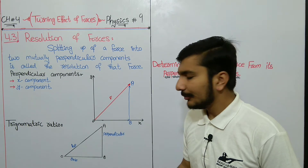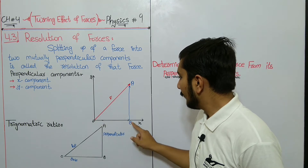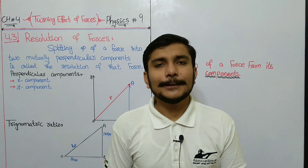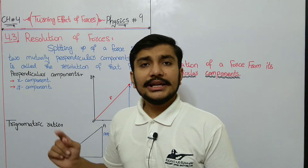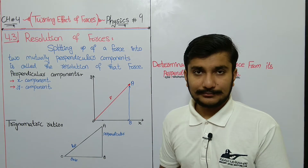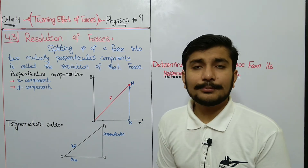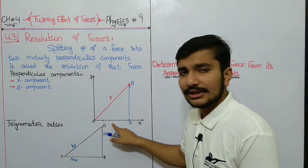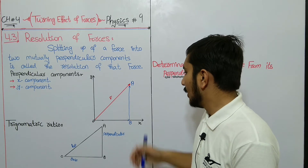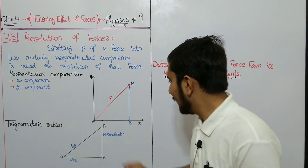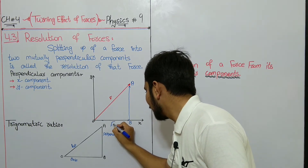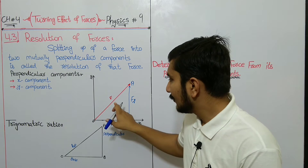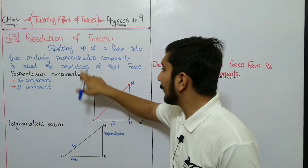We can call the x-axis component OB and the y-axis component BA. So we will say that this is the x-axis component and this is the y-axis component. Dear students, there is a force — we will split it down on the x-axis and on the y-axis. The x-axis component is Fx and the y-axis component is Fy. This is a force that we have divided into two mutually perpendicular components.